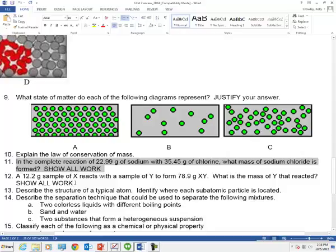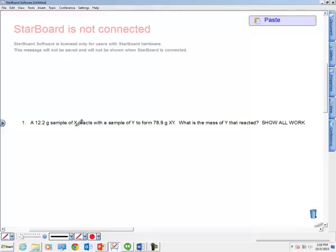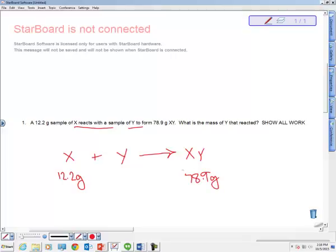Next question. A 12.2 gram of X reacts with a sample of Y to form 78.9 grams of XY. What is the mass of the Y that reacted? So this time it says that this X stuff reacts with Y. So that means X reacts with Y to form or to make on the product side XY. Now it looks like we have enough information of X. We have 12.2 grams. And it looks like we have a lot of information about this guy, XY. We have 78.9 grams. And you'll notice that the product is larger than 12.2. The mass here is larger than that. So we kind of need to know what this missing piece is. And remember, the mass of the reactants should equal the mass of the products. So to figure out that missing piece, all we have to do is subtract. 78.9 minus 12.2. I get 66.7 grams. Final answer.